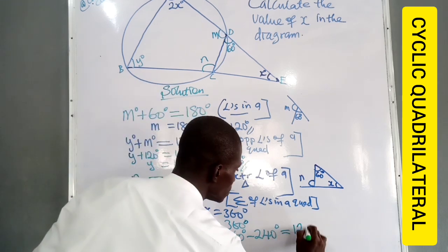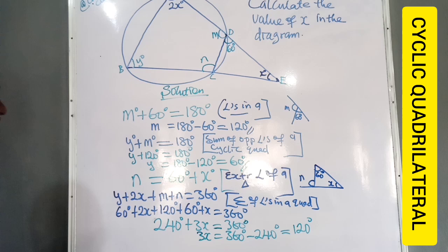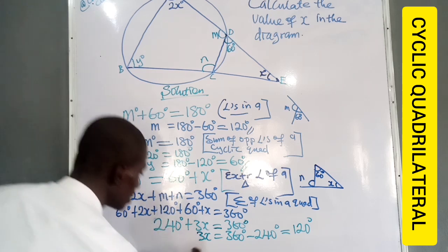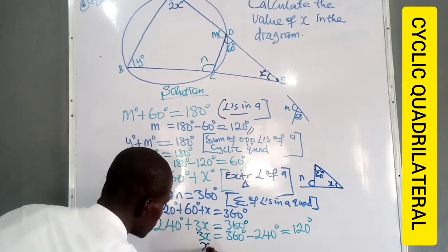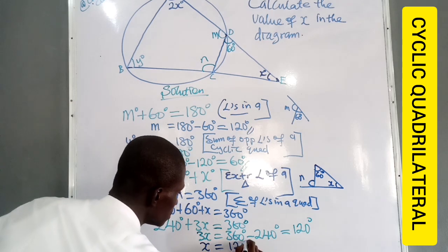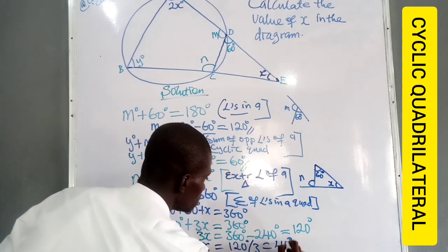3X is equal to 360 degrees minus 240 degrees, which is 120 degrees. Now can we find X? Yes. So we have that X is equal to 120 degrees divided by 3, which is 40 degrees.